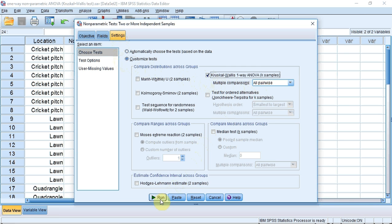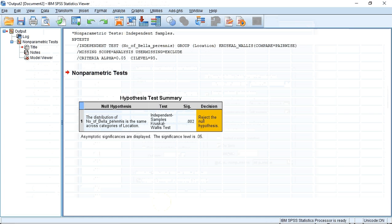We can see here that SPSS has given us a significance of 0.002.